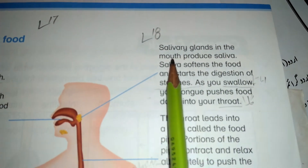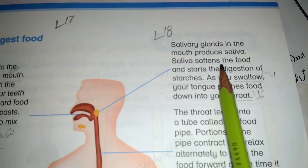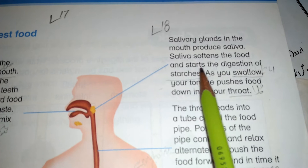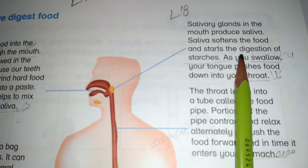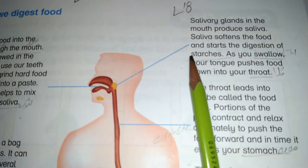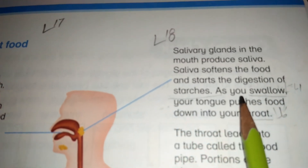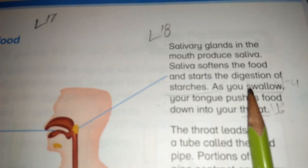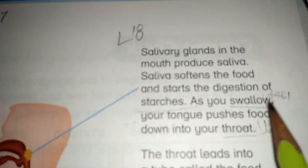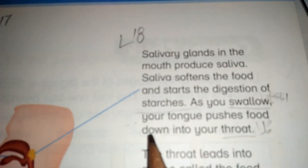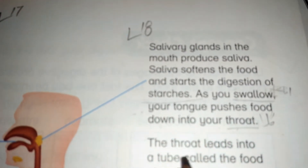Salivary glands in the mouth produce saliva. Through saliva, the mouth moistens the food and starts the digestion of starch. As you swallow, your tongue pushes food down into your throat.